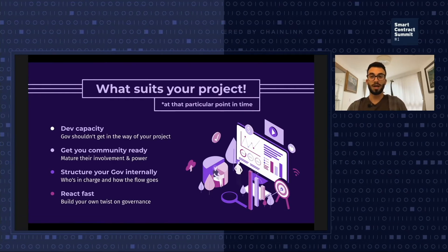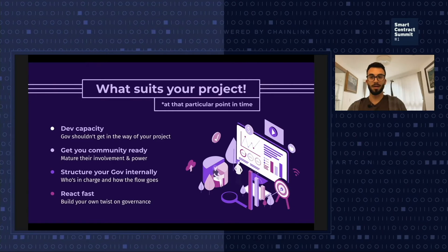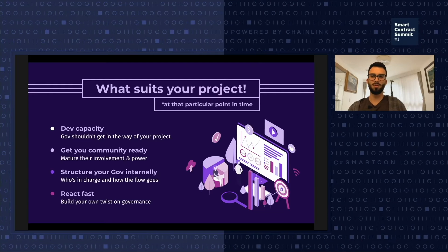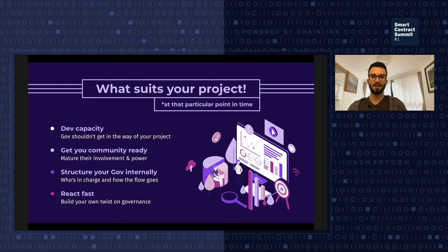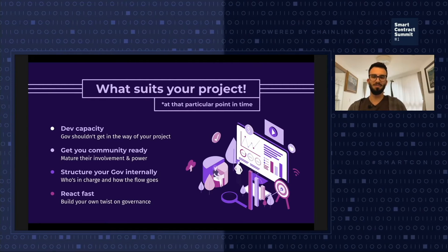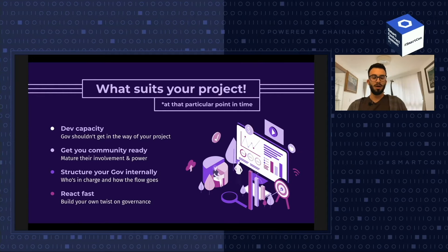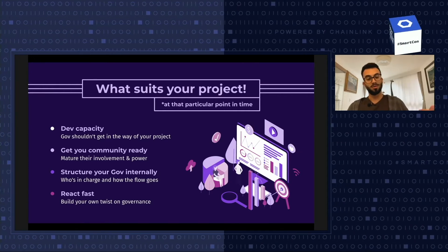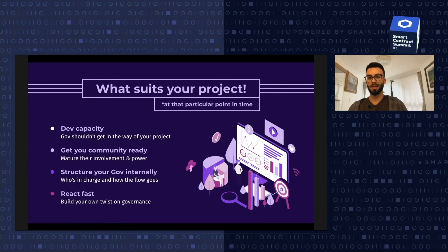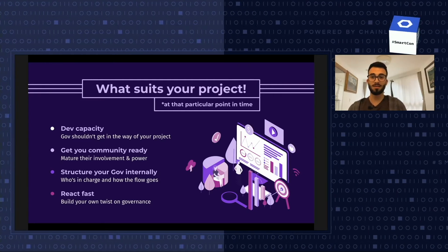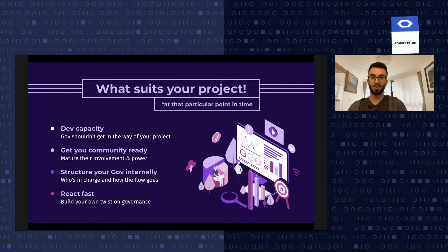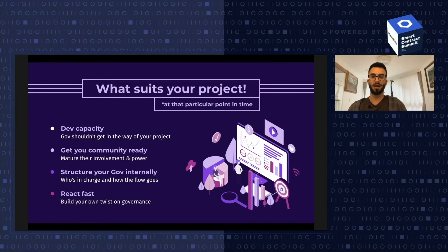You have to account for your development capacity — developing governance shouldn't take away from developing your actual project. You also need to get your community ready, because if you spend months building a governance module but your community has never had contact with governance, it might have very little adoption. You need to structure governance internally in your project — who's in charge and what's the flow for implementing changes. And react fast: listen to community feedback always and adapt to it.